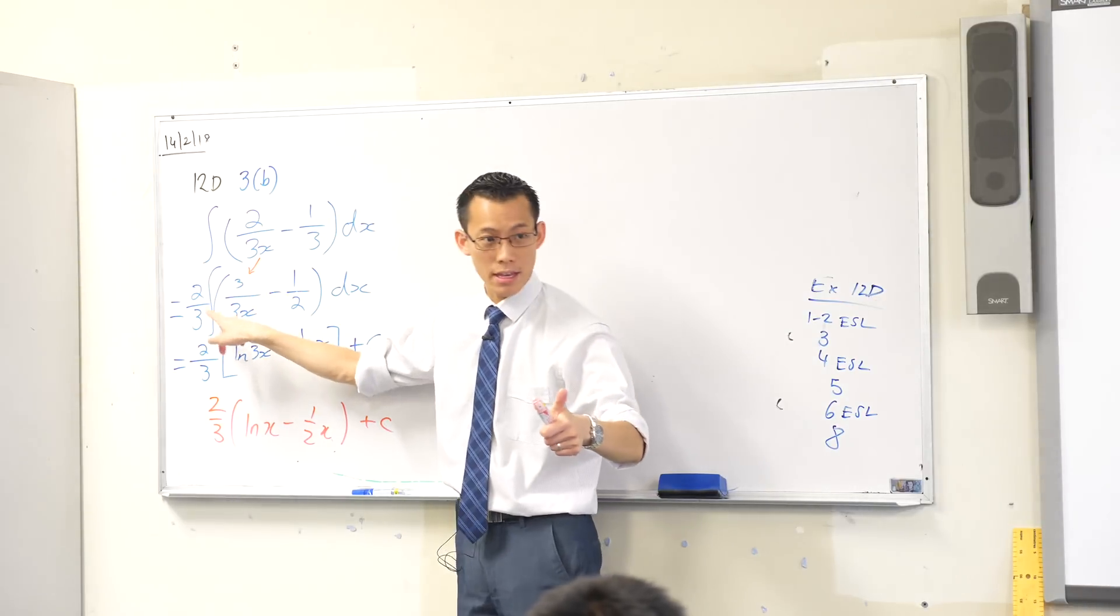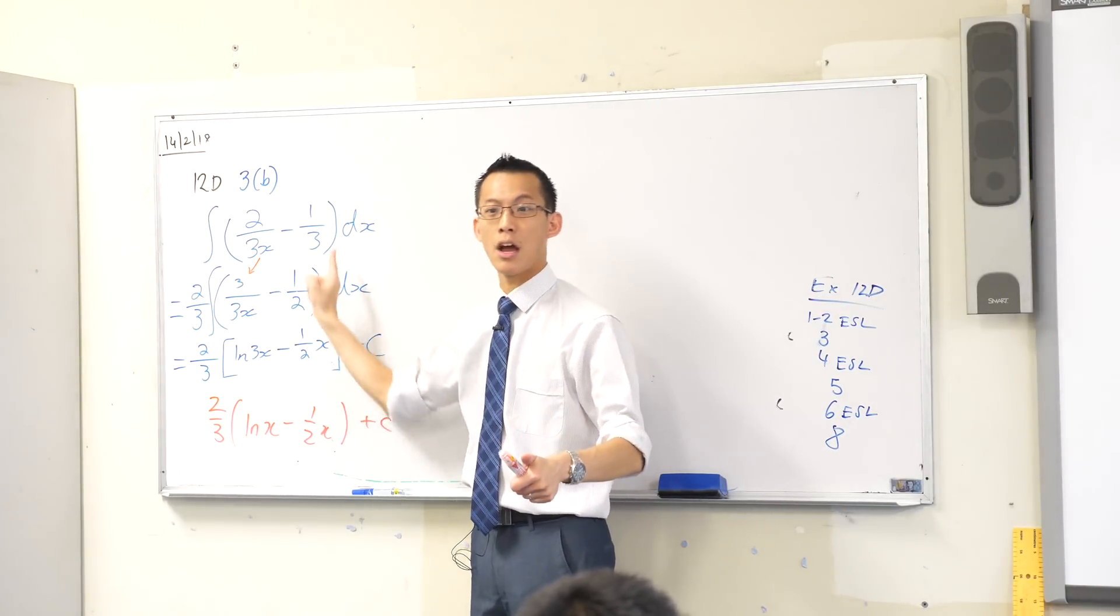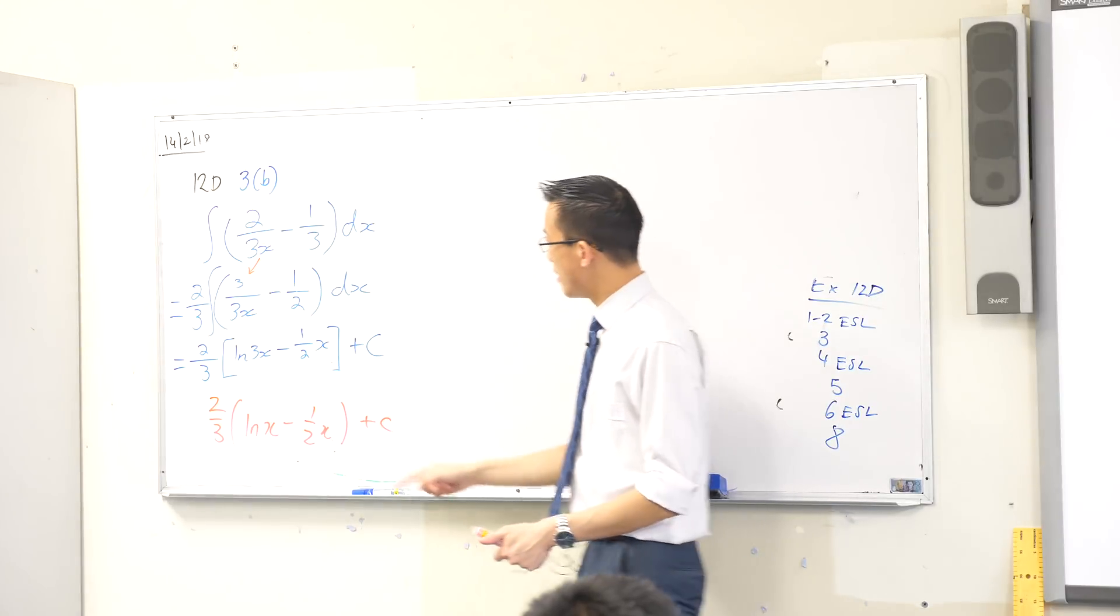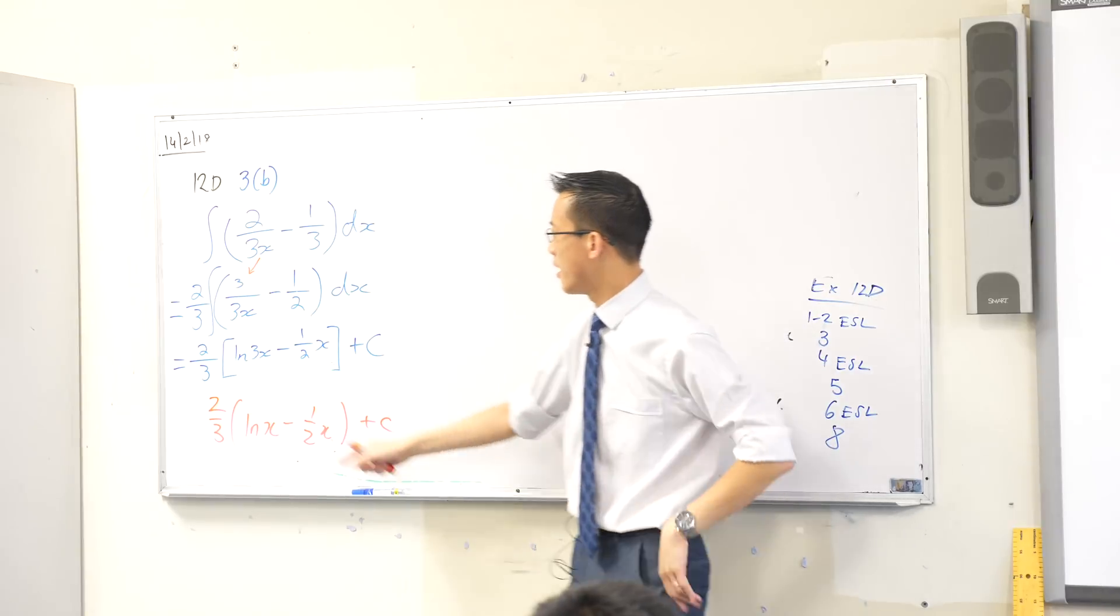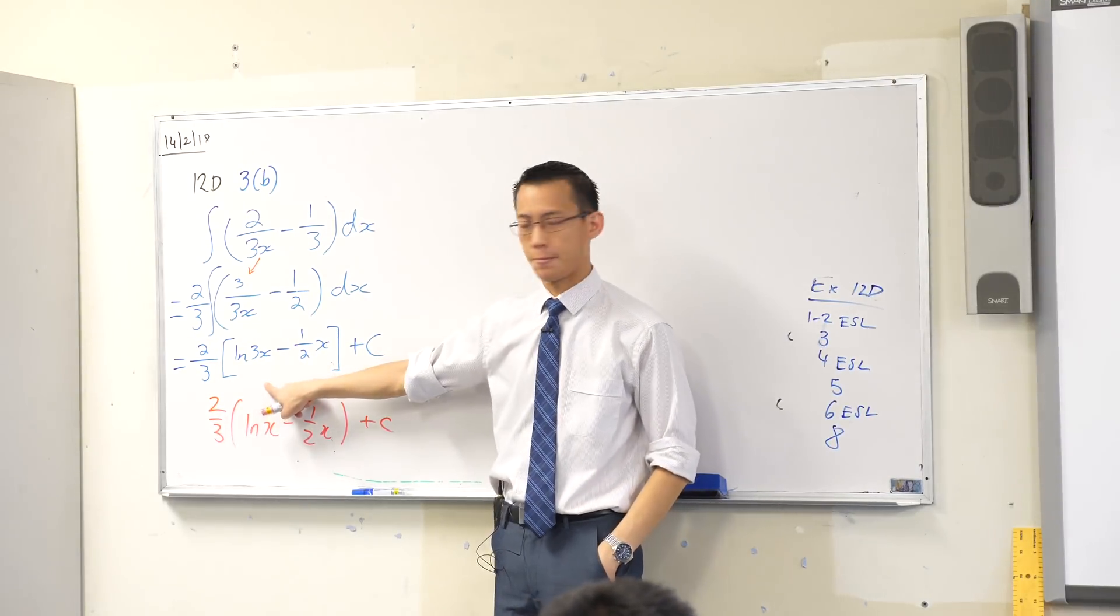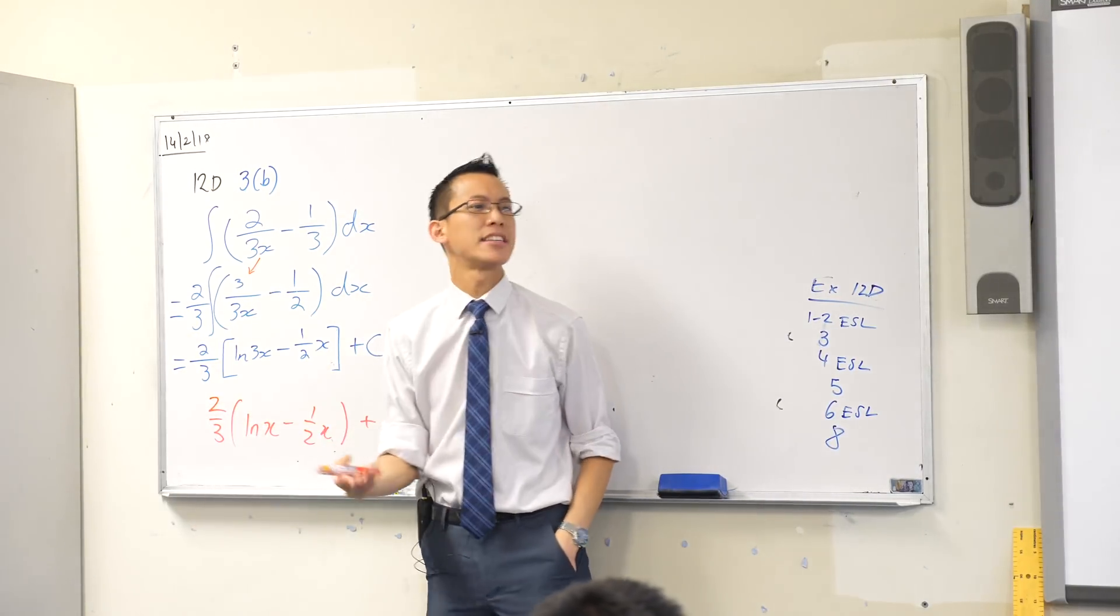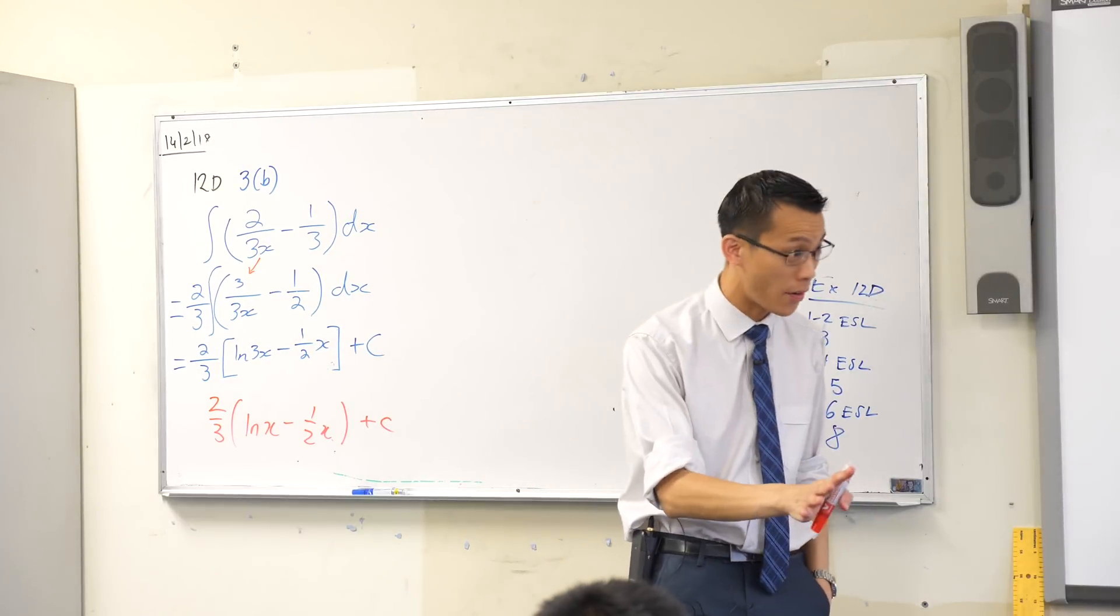He's multiplied by the right thing, you can see if I multiplied it back in I would return to the original line. So he's done it correctly, at least with his trajectory in mind. So then he gets to the next line, what's he done? This two thirds just hangs out the front, because it's a constant, that's fine.